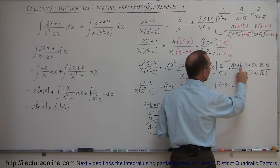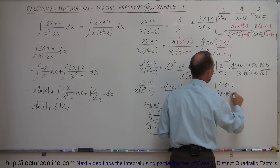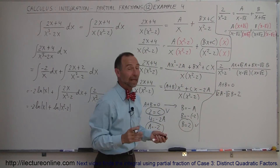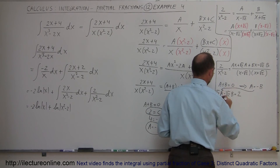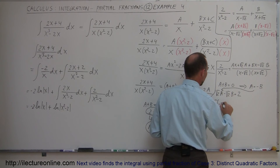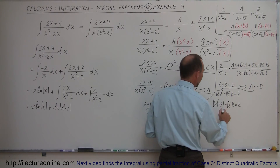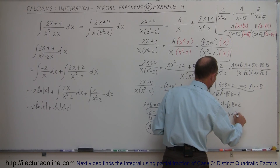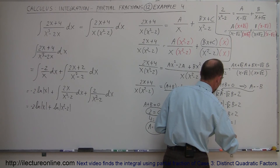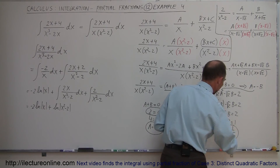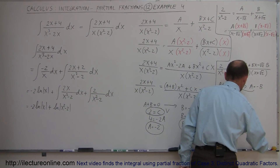From a plus b equals 0, we know a equals negative b. Substituting into root 2 times a minus root 2 times b equals 2: root 2 times negative b minus root 2 times b equals 2, so negative 2 root 2 times b equals 2. Dividing both sides, b equals negative 1 over root 2. Since a equals negative b, a equals positive 1 over root 2.